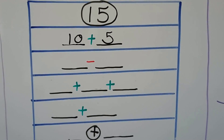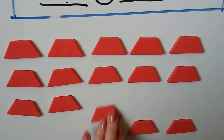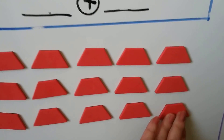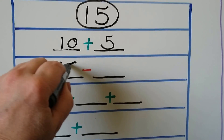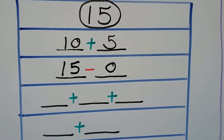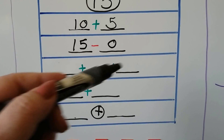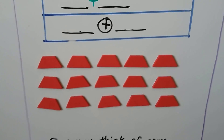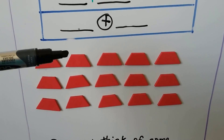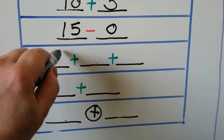For a subtraction sentence, we can say we have 15 counters and we take away 0, so it stays 15. We could do 15 minus 0 and still have 15. How about three numbers added together that make 15? We could do 5 plus 5 plus 5 — that would be 15.